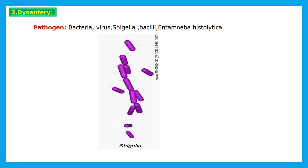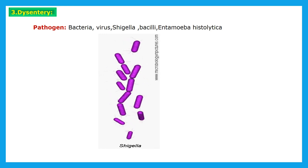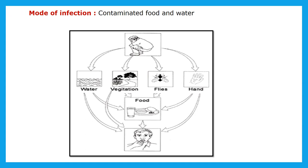The next disease is dysentery. This dysentery is caused through pathogens — bacteria, virus, Shigella bacilli, and Entamoeba histolytica. Mode of infection is contaminated food and water. From the picture you can understand how species spread through flies, hands, and water — how food and water become contaminated, and how if that food or water is eaten by a person, that disease can spread.